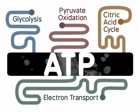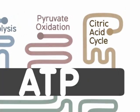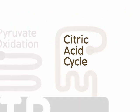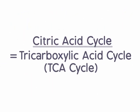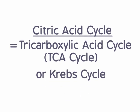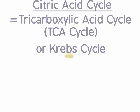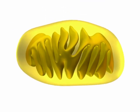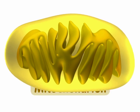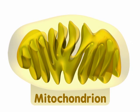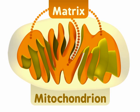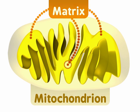In this animation, we will focus on the citric acid cycle, also called the tricarboxylic acid (TCA) cycle, or Krebs cycle. The citric acid cycle takes place in the matrix, or fluid, of the mitochondrion. This is where mitochondrial DNA is found and where fatty acid breakdown takes place.